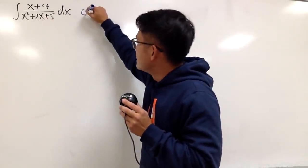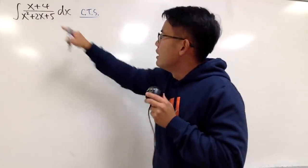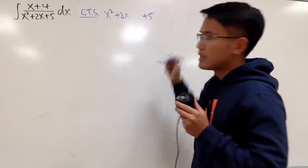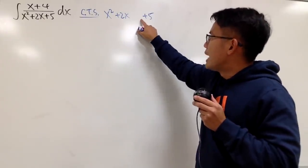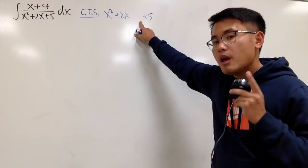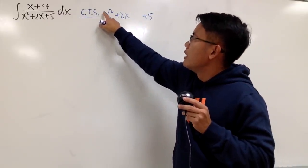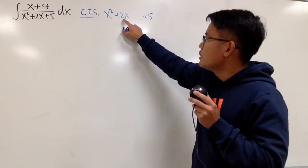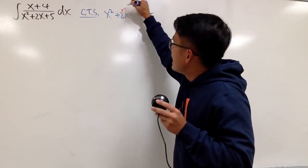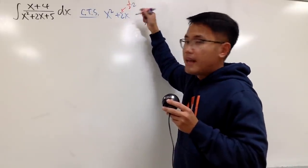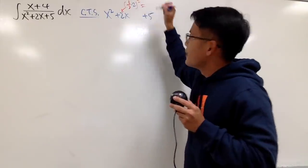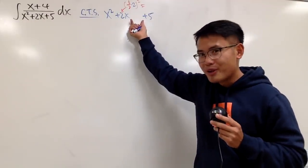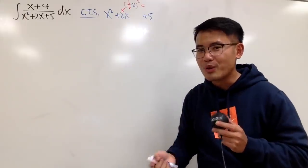So here we go. Let me put down CTS for completing the square, and we do that to the denominator: x squared plus 2x, leave a space, and then plus 5. I have to think about a number to add right here. First, we have to make sure the leading coefficient is 1, and we do have 1 in front of the x squared, so that's good. Then we look at the coefficient of x, which is 2. What we do is take one half times 2, put that in parentheses, and then square it. I call the result the magic number, because once we add the magic number, the first three terms will become a perfect square — it's so magical!